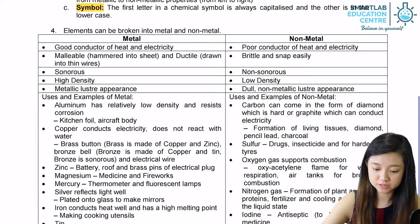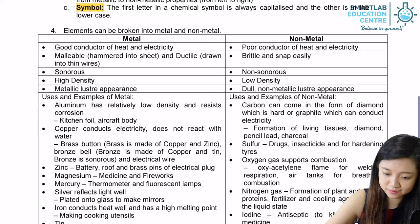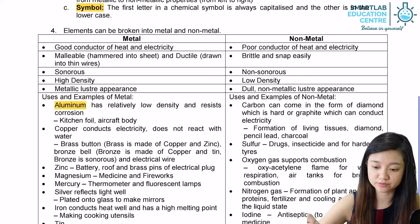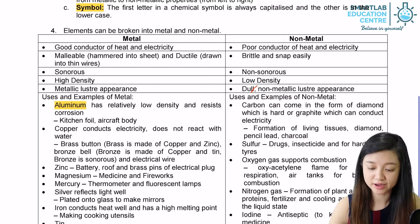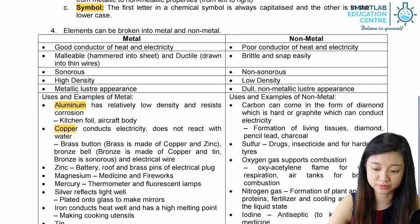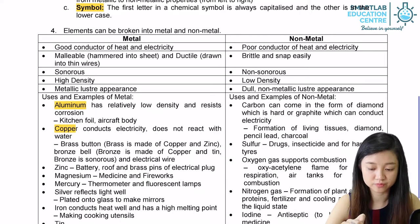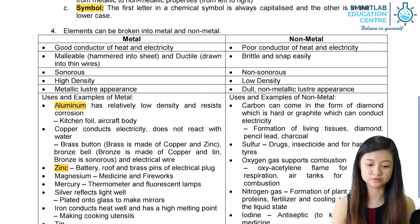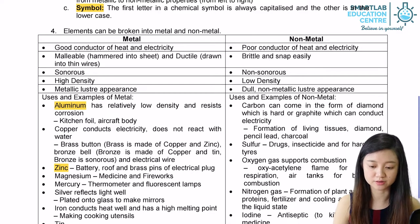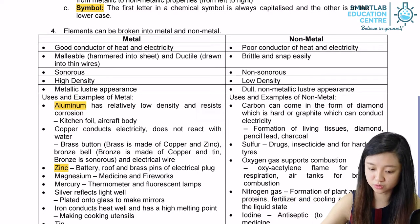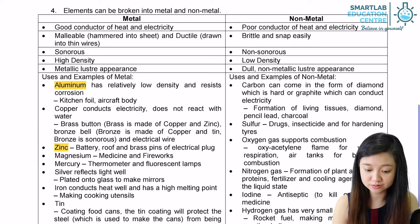Some examples of metals: aluminium has a relatively low density and can resist corrosion, making it very light and suitable for aircraft bodies. Copper conducts electricity and does not react with water, so it is good for making alloys such as brass (copper and zinc) and bronze (copper and tin). Zinc is good for batteries and rooftops. Magnesium is used for medicine and fireworks. Mercury is found in thermometers and fluorescent lamps. Silver can reflect light. Iron conducts heat well and is used for cooking utensils. Tin is used for coating food cans to protect steel from corrosion.